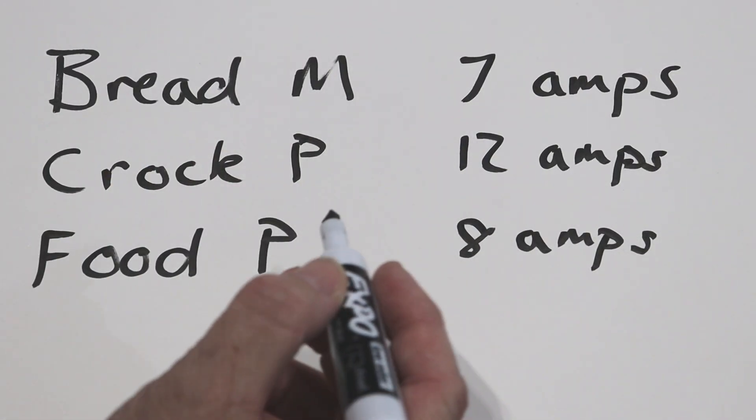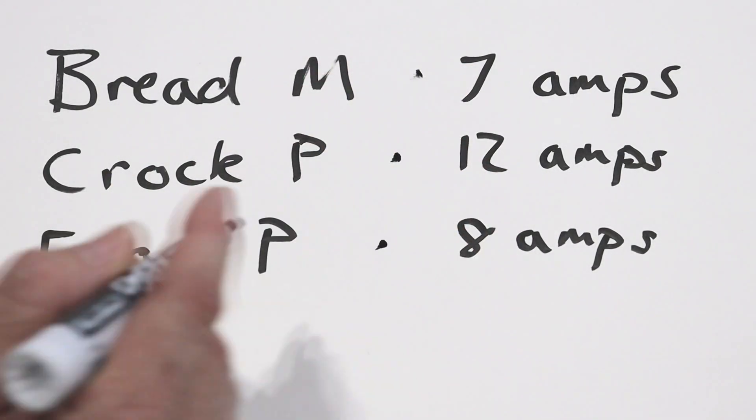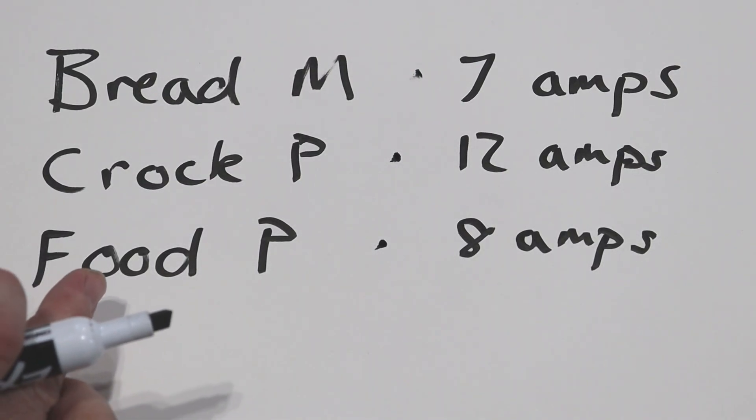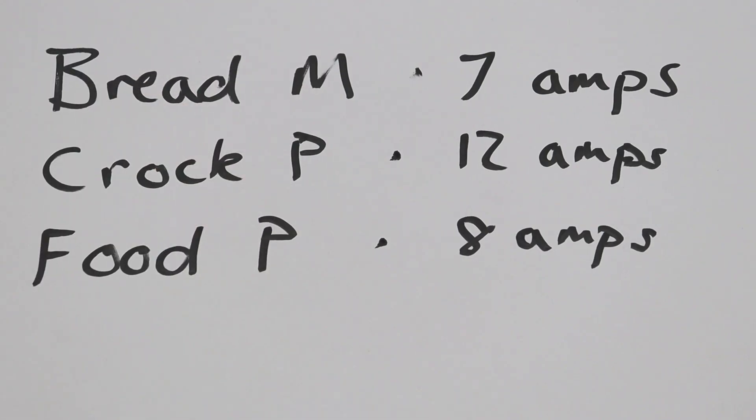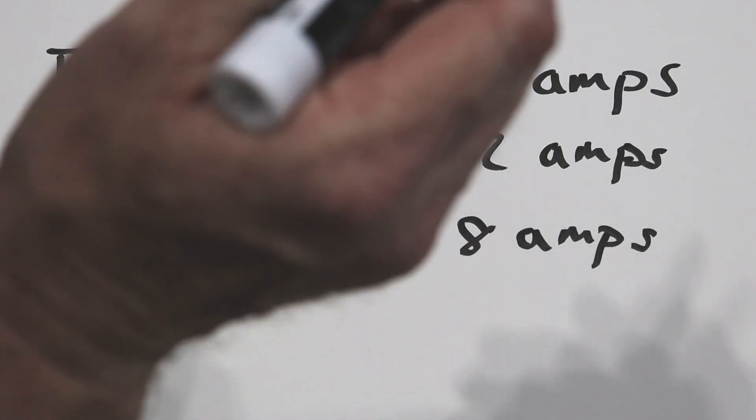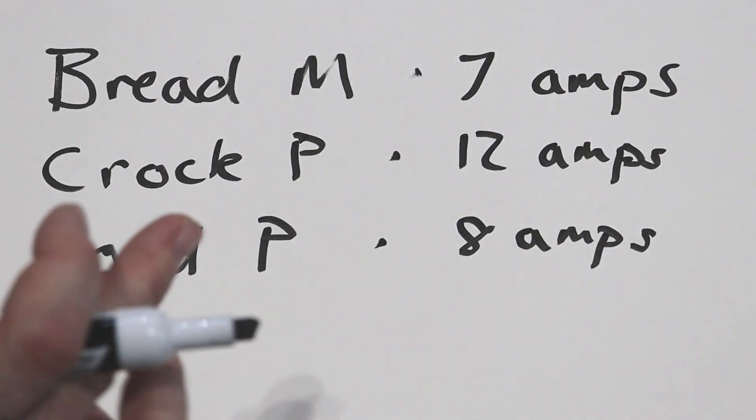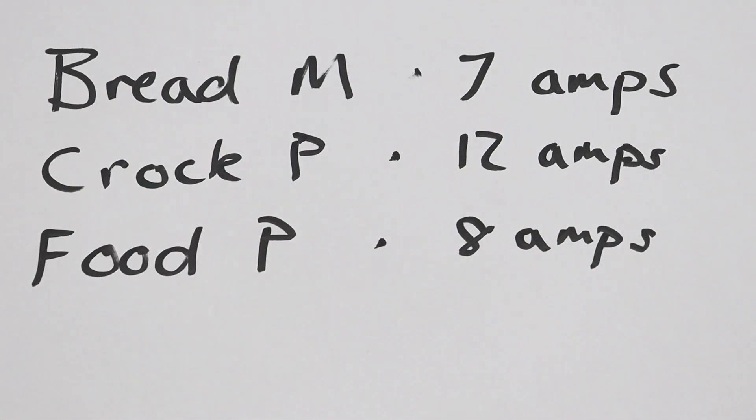But what I would do is I would put in an outlet for each one. So if you have any potential to be really busy in the kitchen and using multiple things at one time, I would definitely plan on having enough circuits to make sure that you can accommodate all of this.